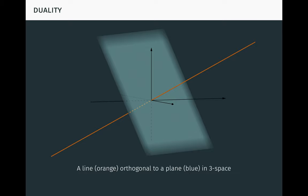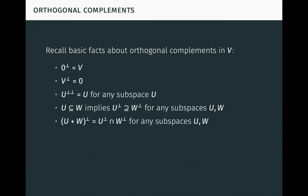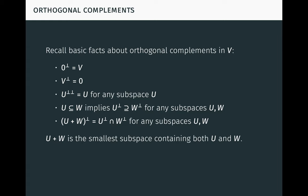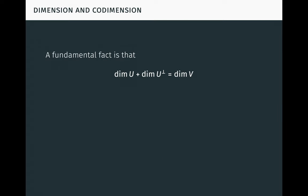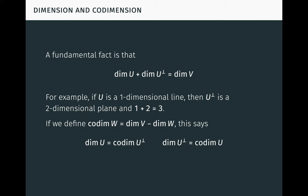It's useful to keep this picture in mind. There are a number of basic facts about orthogonal complements in R3 which you've probably seen before. Take a moment to pause the video and think through these. Here the sum U plus W is the smallest subspace containing both U and W. The intersection U intersect W is the largest subspace contained in both U and W. A fundamental fact is that the dimension of a subspace U plus the dimension of the subspace U-complement is equal to the dimension of V, which in this case is 3. For example, if U is a one-dimensional line, then U-complement is a two-dimensional plane, as we saw in the picture, and certainly 1 plus 2 equals 3. If we define the codimension of a subspace W to be the dimension of V minus the dimension of W, this just says that the dimension of U is the codimension of U-complement, and the dimension of U-complement is the codimension of U.